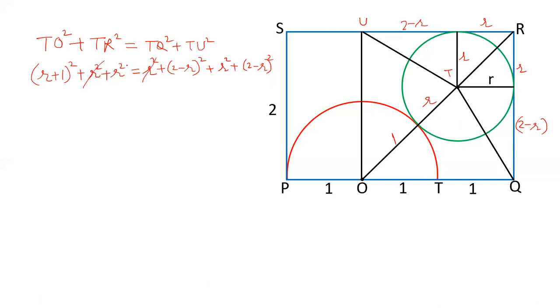R square cancel out with R square. R plus 1 square is R square plus 2R plus 1. A plus B whole square is A square plus 2AB plus B square. A minus B whole square is A square plus B square minus 2AB. And the same for this one. 4 plus R square minus 4R. Again we have one R square. We can cancel out this.